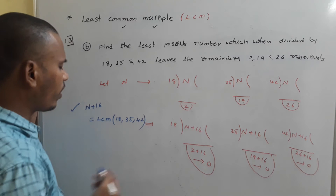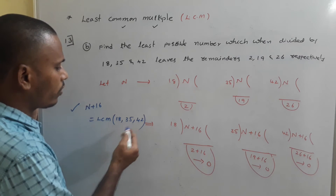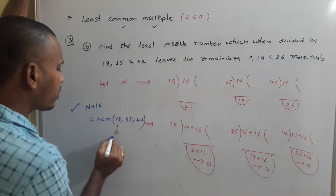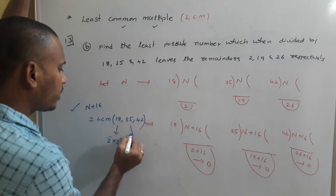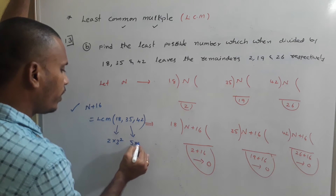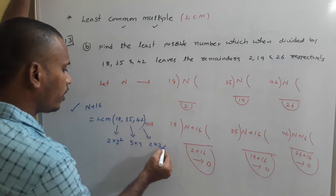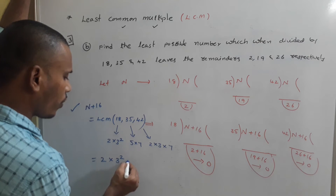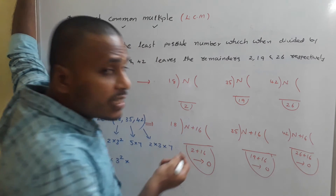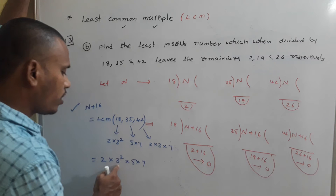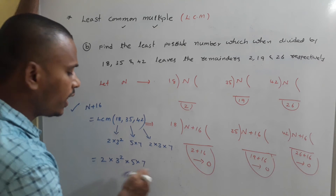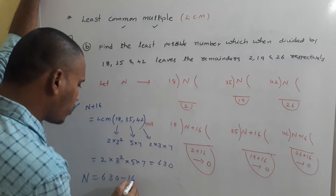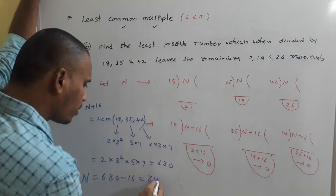LCM of 18, 35, and 42: 18 = 2 × 3², 35 = 5 × 7, 42 = 2 × 3 × 7. LCM = 2 × 3² × 5 × 7 = 2 × 9 × 5 × 7 = 630. So N + 16 = 630, which means N = 630 − 16 = 614.